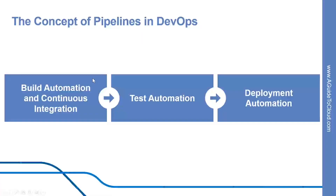Build automation and continuous integration. The pipeline starts by building the binaries to create the deliverables that will be passed to the subsequent stages. New features implemented by developers are integrated into the central codebase on a continuous basis, built and unit tested. This is the most direct feedback cycle that informs the development team about the health of their application's code.